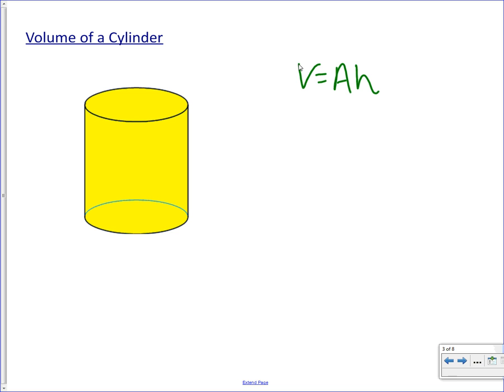But for a cylinder, we always know where that area is. We know how to find the area of a circle. The area of a circle is always pi r squared. So if we want to use a quicker method to calculate the volume of a cylinder, all we need to do is substitute that area into there. So the formula for the volume of a cylinder would be V is equal to pi r squared multiplied by height.